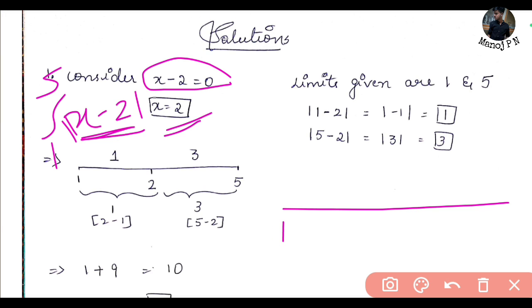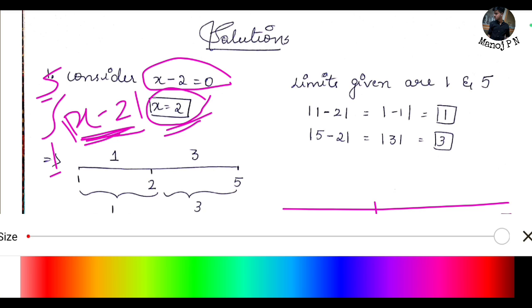Next step, draw a line. Always remember guys, lower limit on the left side of the line. In this case 1 is the lower limit and 5 is the higher limit on the right side of the line. x equals 2 obviously comes between 1 and 5.